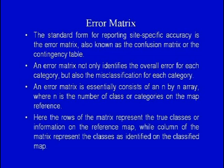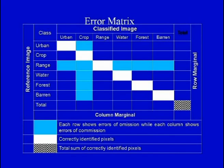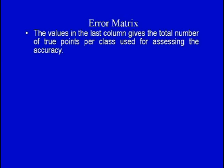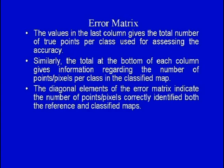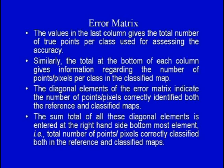An error matrix not only identifies the overall error for each category but also the misclassification of each category. It is an n×n array where n is the number of classes. Rows represent classes from the reference map; columns represent classes from the classified map. The diagonal elements indicate the number of points correctly identified on both maps. The values in the last column give the total number of true points per class; the bottom row gives the total per class in the classified map.